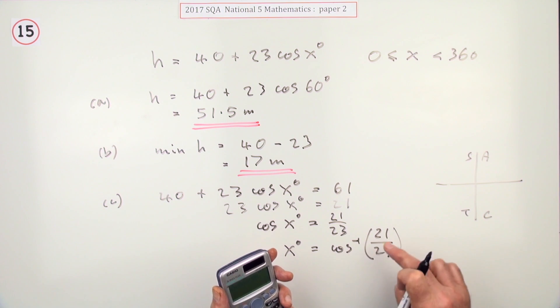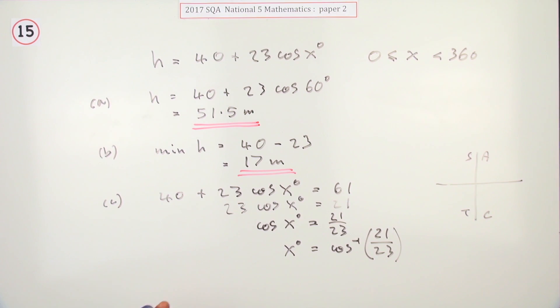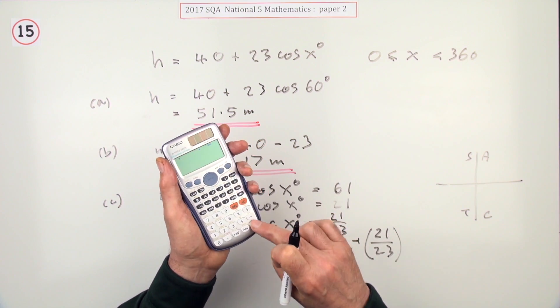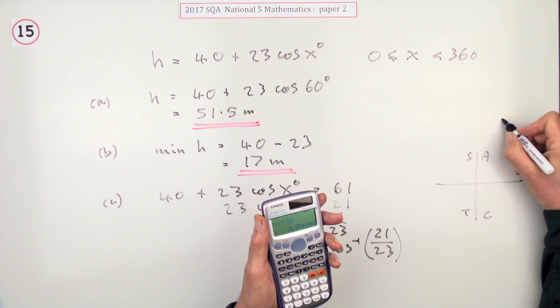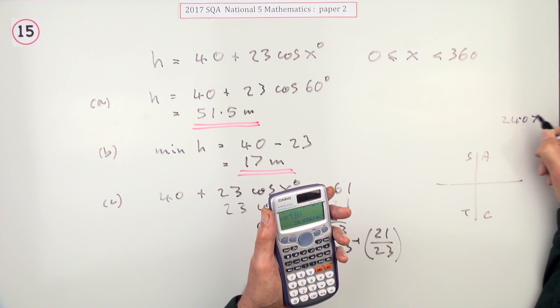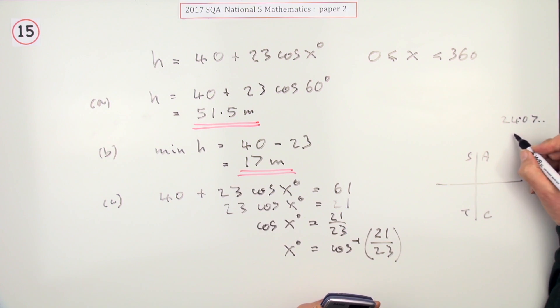So the acute angle would be doing just inverse cos of 21 upon 23. So you just type that in: inverse cos of 21 upon 23, and you get 24.07 etc. So I'll just call that 24.1.